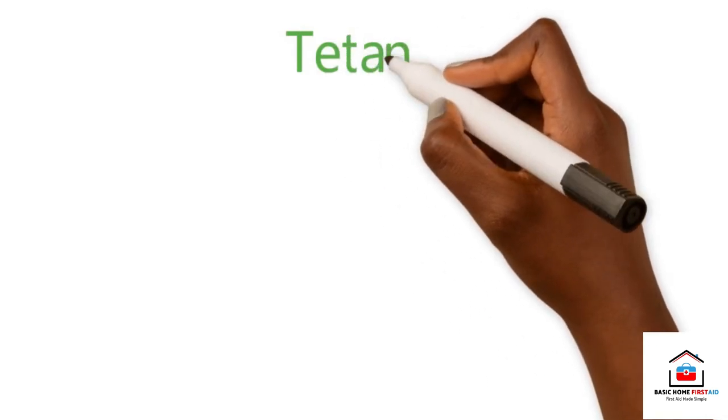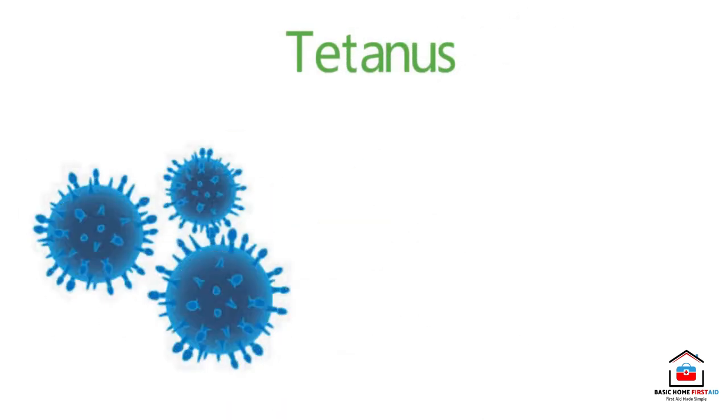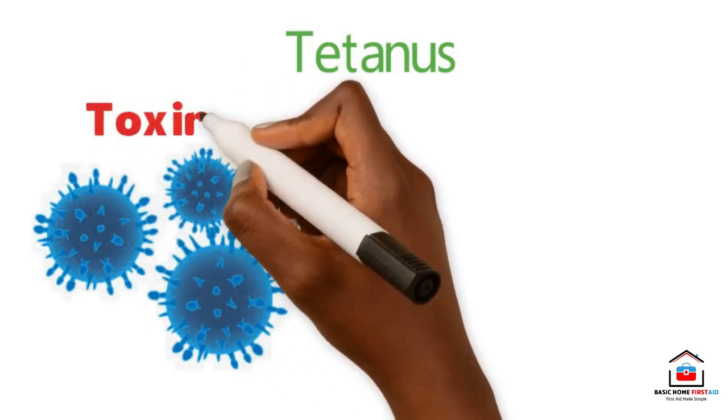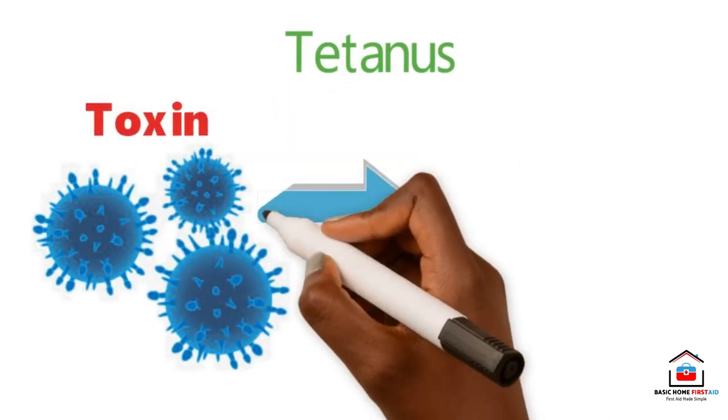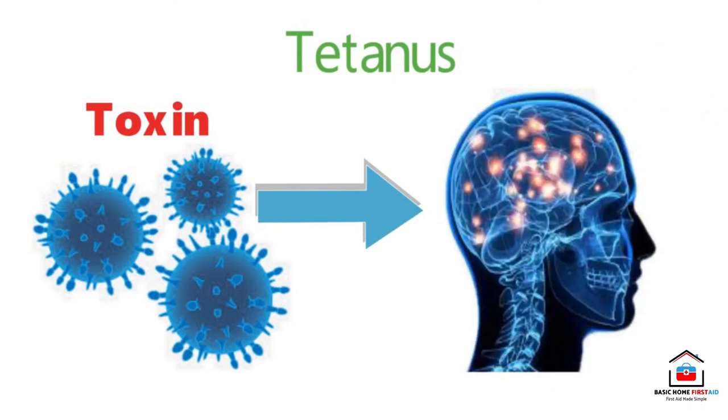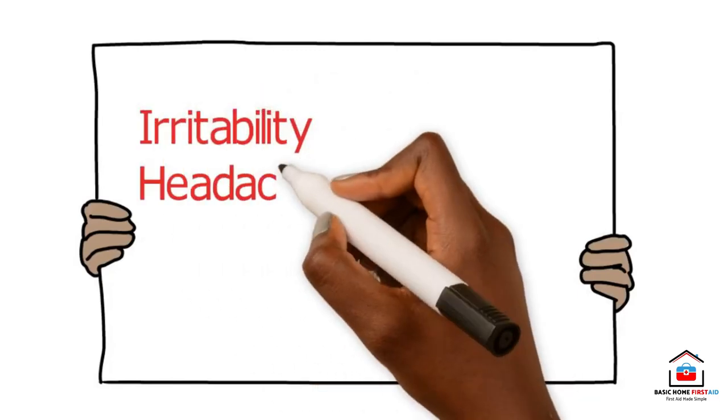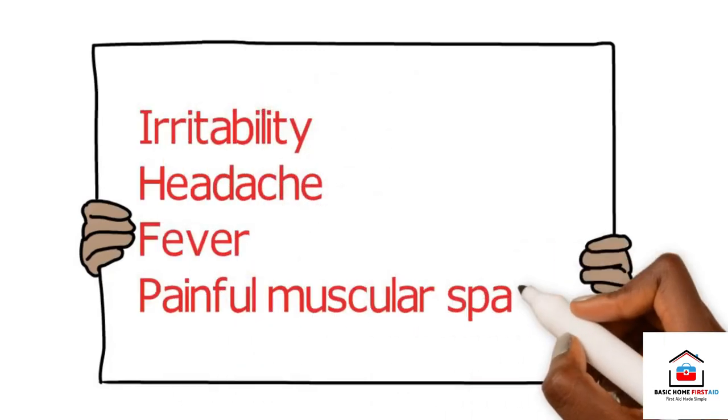Tetanus is also a potentially fatal infection following animal bites. It is caused by the transmission of bacteria that produce a toxin which can occur in wounds created by animal and human bites. The toxin attacks the central nervous system and is one of the most deadly poisons known. Signals of tetanus include irritability, headache, fever, and painful muscular spasms.